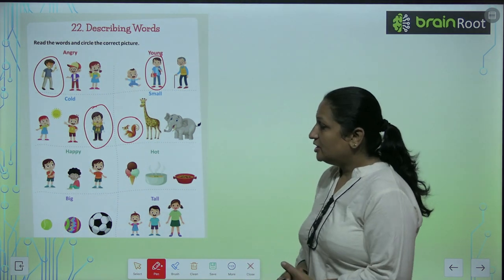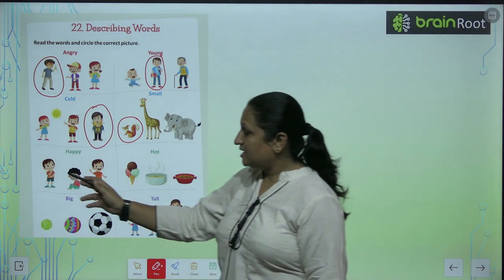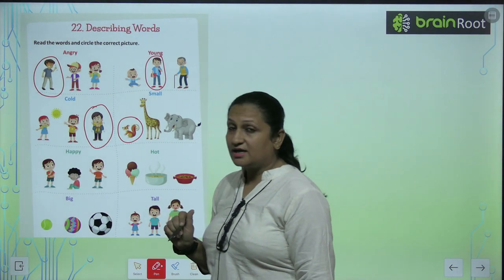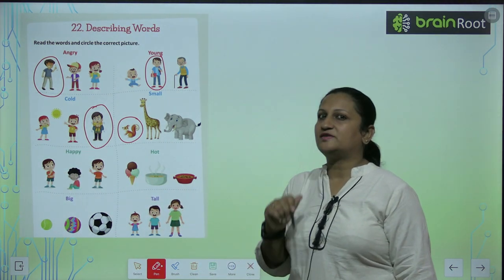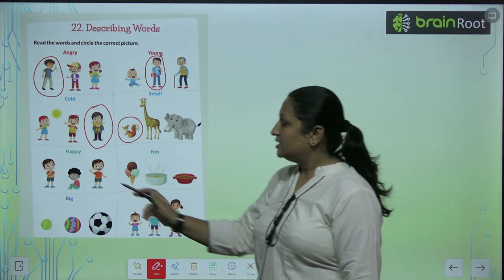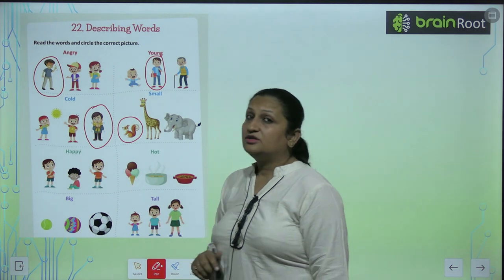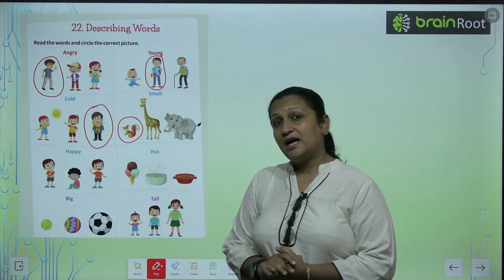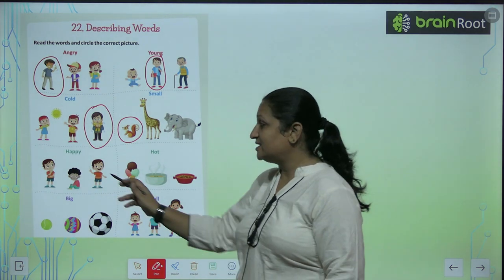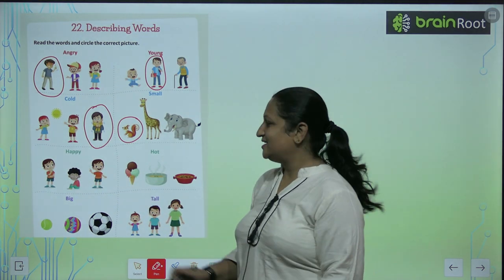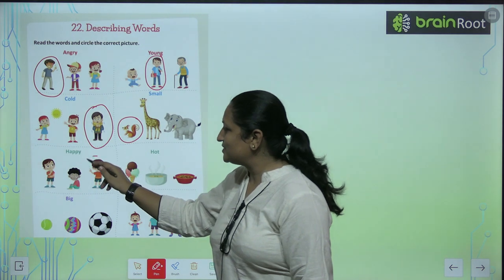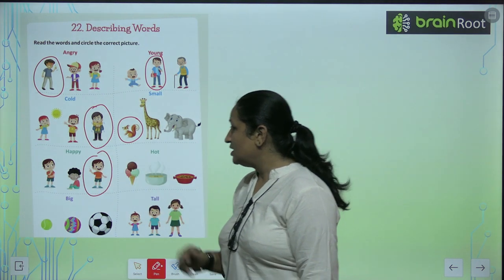Then you can see, yeh bachcha kya karra hai? This kid is thinking of something. Yeh bachcha, this kid is crying. But this child is happy. So you are going to circle this one.